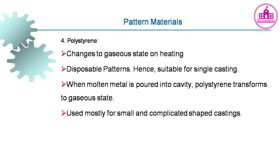Polystyrene changes to a gaseous state on heating, making disposable patterns suitable for single casting. When molten metal is poured into the cavity, the polystyrene transforms to gaseous state. It is used mostly for small and complicated shape castings.